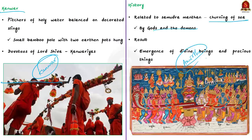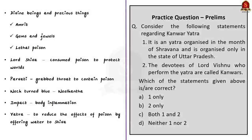All entities approached Lord Shiva, the destroyer, to consume the poison so that the living worlds could be protected. As Shiva drank the poison, his wife Parvati grabbed his throat to contain the poison and prevent it from affecting the worlds inside him. Shiva's neck turned blue from the effort, earning him the name Nilkantha — the one with the blue throat. But the poison still had an impact and his body was inflamed. To reduce the effects of that poison, the practice of offering water to Shiva began. That is the history of Kanwar Yatra.